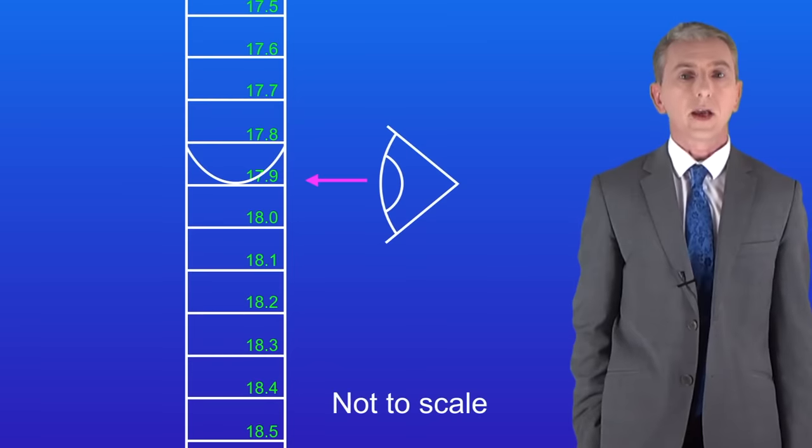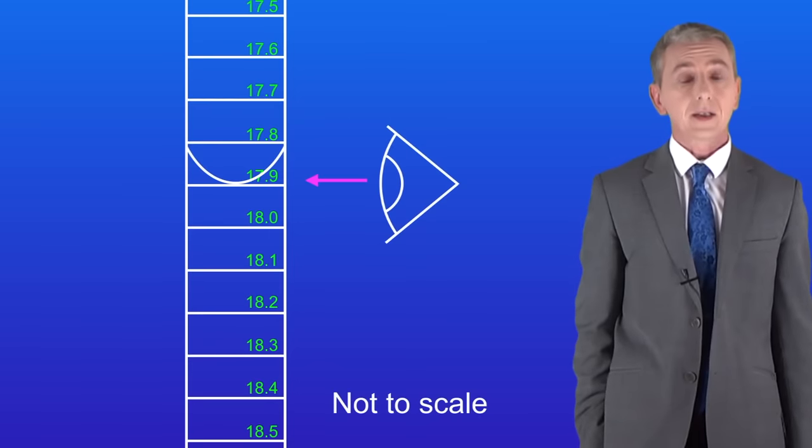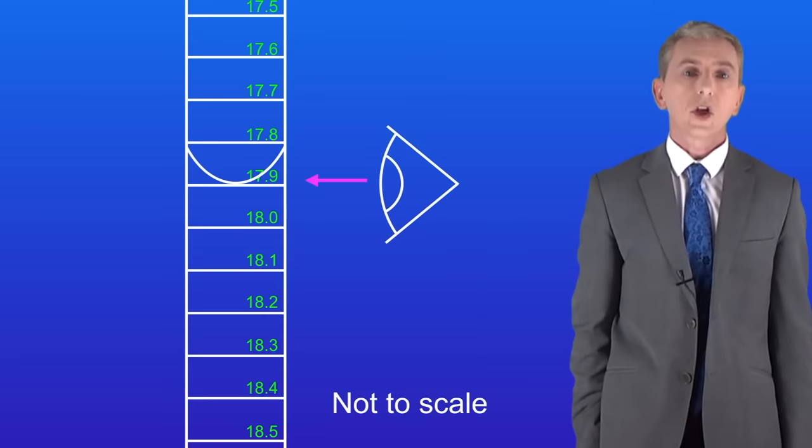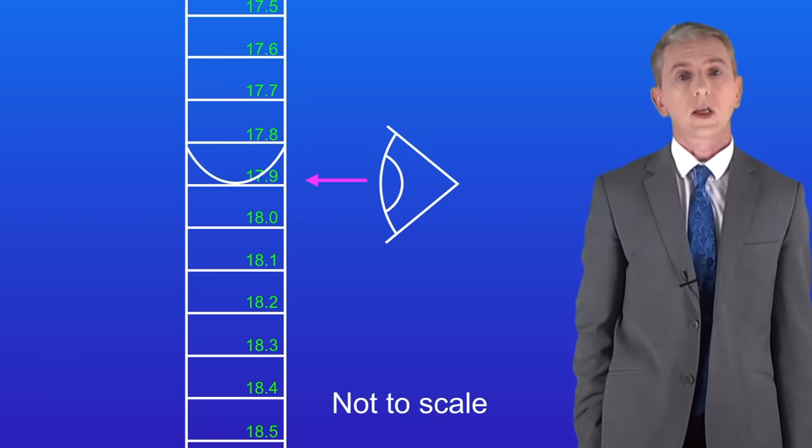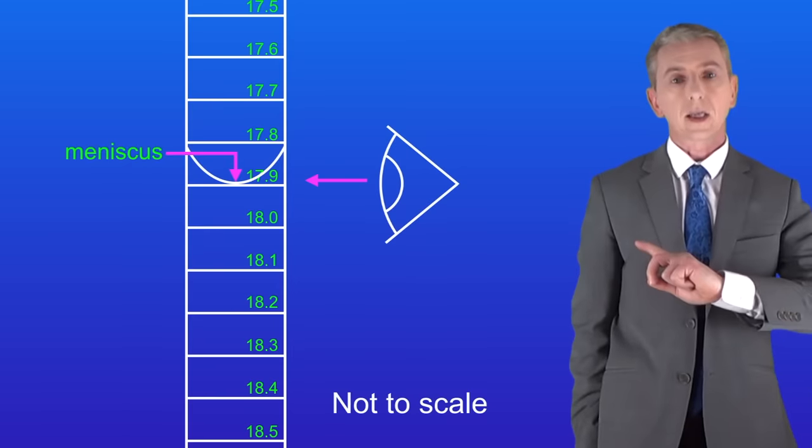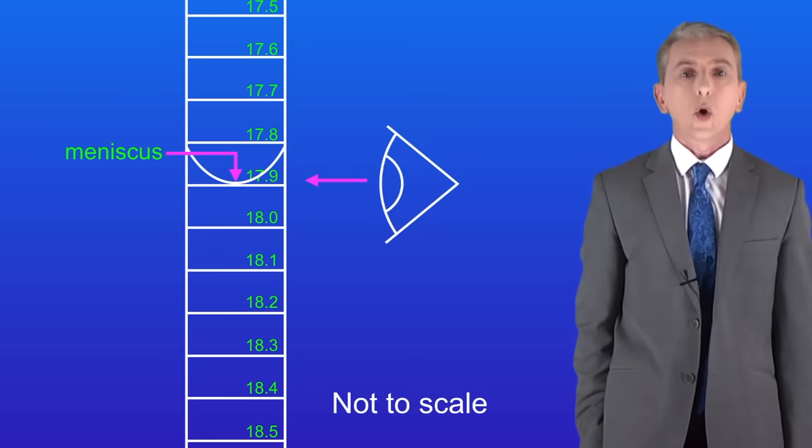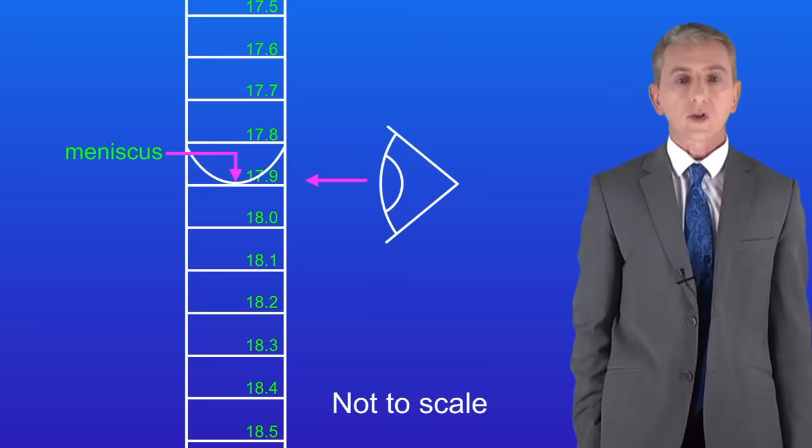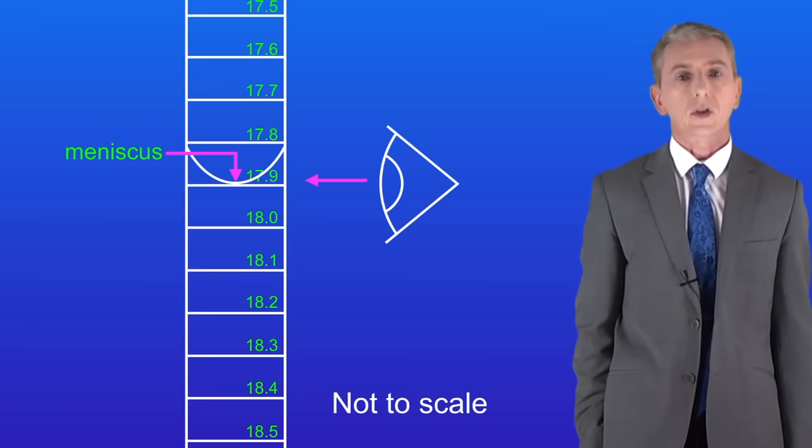When reading the burette you need to make sure that your eye is level with the surface of the liquid. The surface of the liquid naturally curves. Scientists call this the meniscus and I'm showing you that here. We always read the burette at the bottom of the meniscus so in this case the reading is 17.9 centimeters cubed.